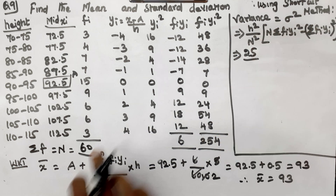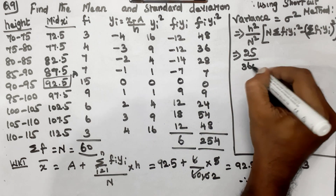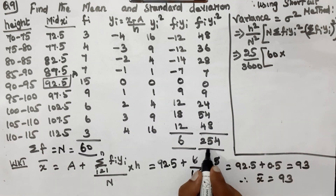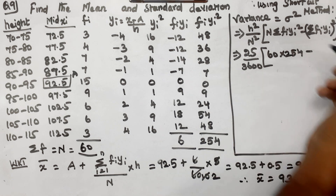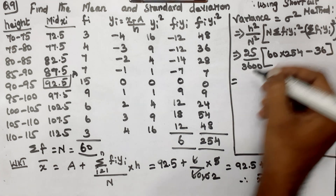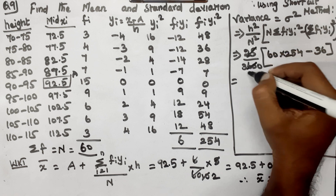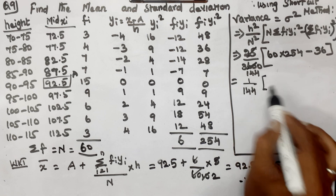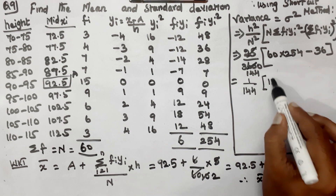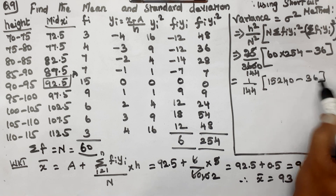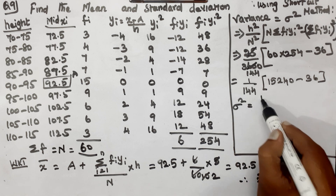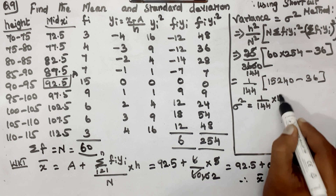25 divided by 60 — square is 3600. N is 60. Summation FiYi square is 254. So: 254 minus FiYi whole square, where 6 squared is 36. This gives us: 1 by 144 into 60 into 250 is 15,214 minus 36. Therefore sigma squared equals 1 by 144 into 15,204.